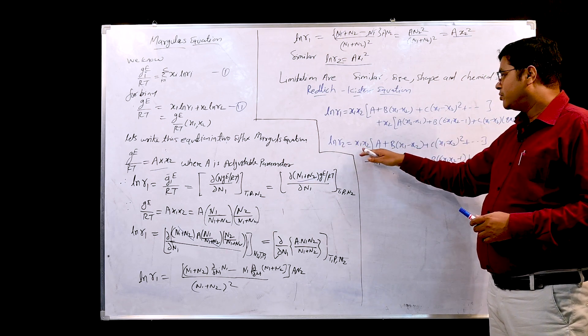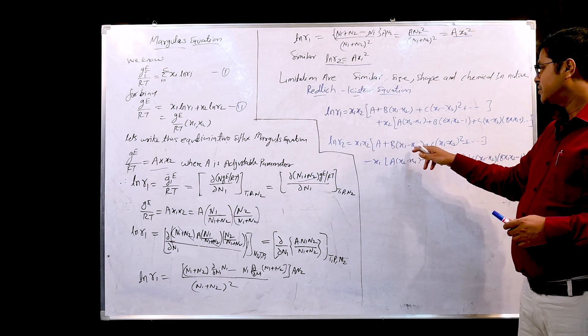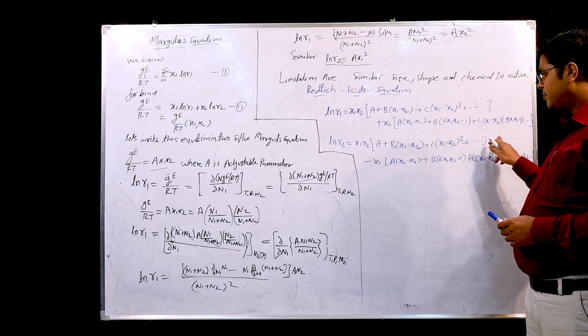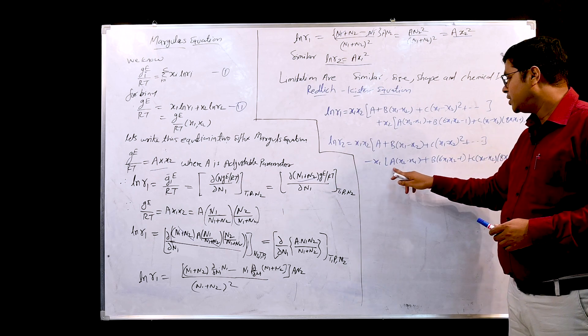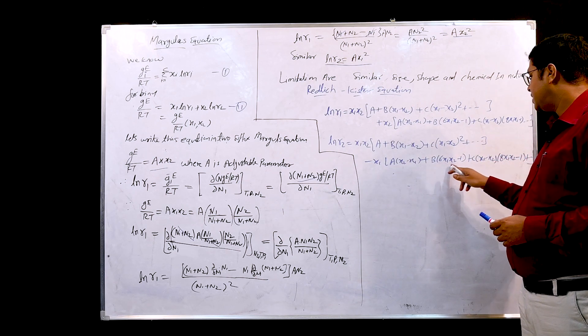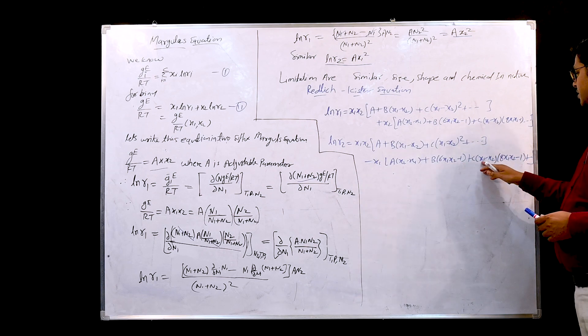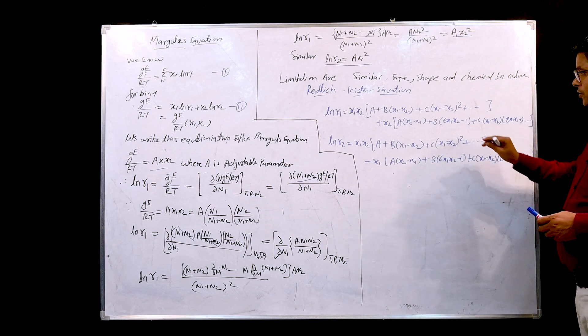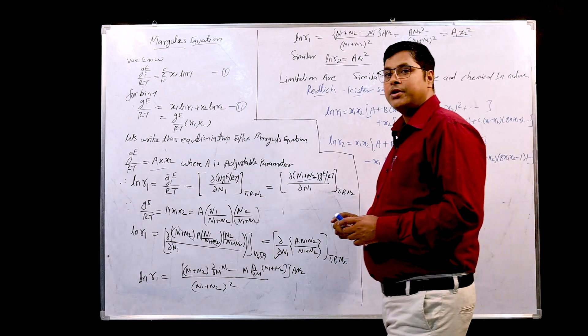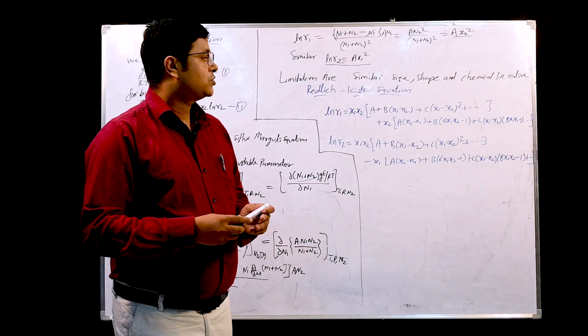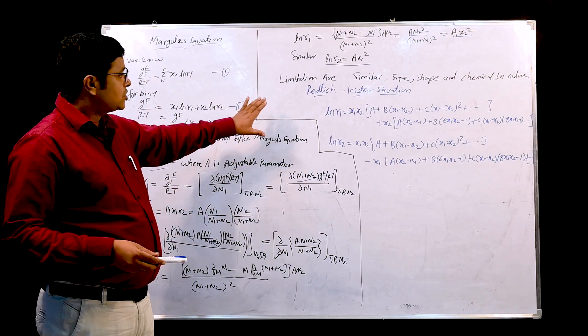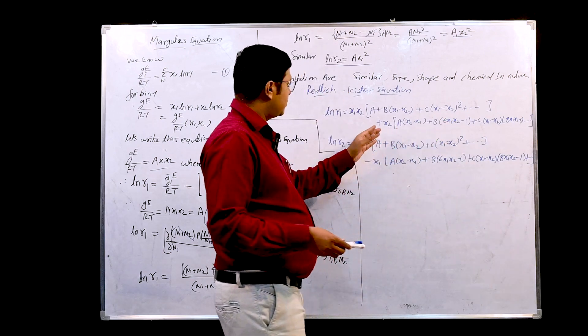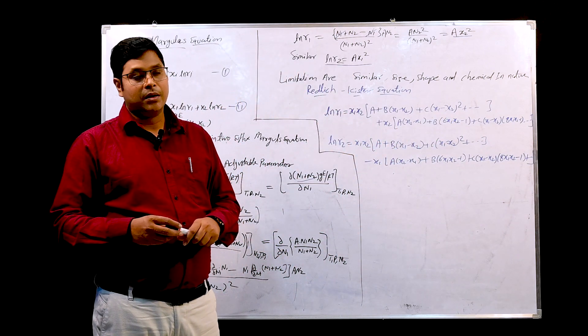Similarly, for ln gamma 2: x1 into x2 in bracket A plus B(x1 - x2) plus C(x1 - x2) square bracket close, minus x1 into A(x2 - x1) plus B(6x1 x2 - 1) plus C(x1 - x2)(8x1 x2 - 1). These two expressions for activity coefficient in a non-ideal solution are given by the Redlich-Kister equation, and with the known value of A, B, and C we can calculate the value of gamma 1 and gamma 2.